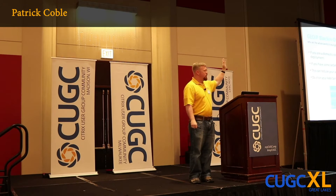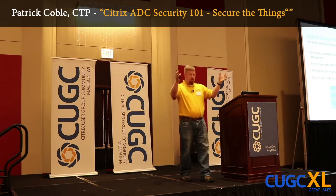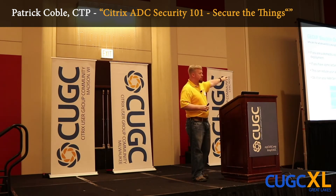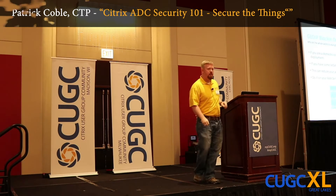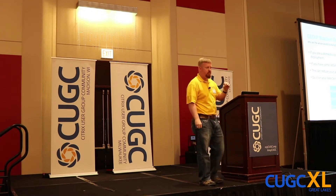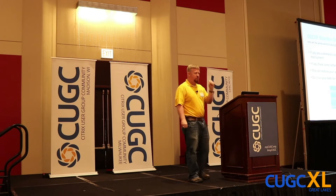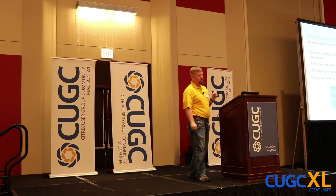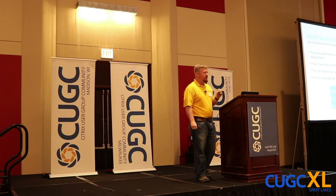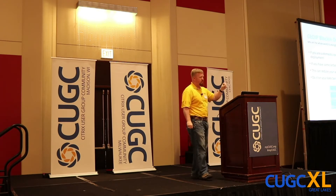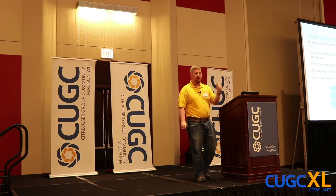Is anybody here like a multi-international company that actually has offices in other places in the world? Everyone that didn't raise their hand — you can prevent two billion IP addresses from getting to all your VIPs with one click. There are only 4.5 billion in the world, so you can reduce your attack surface by over 60% in one second, and you apply it to each VIP.